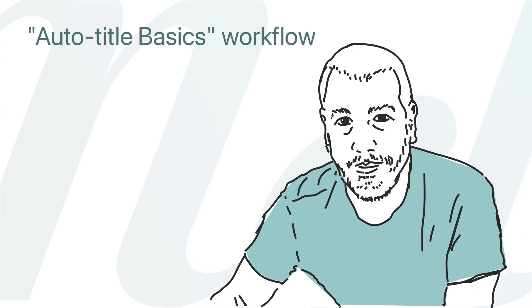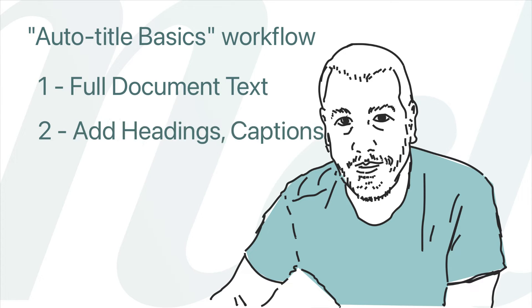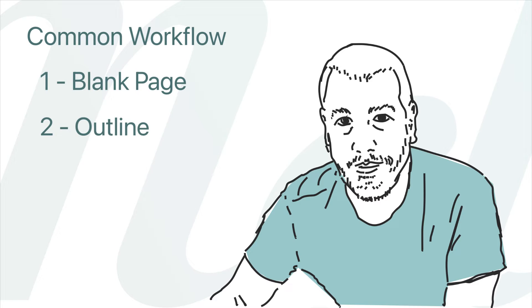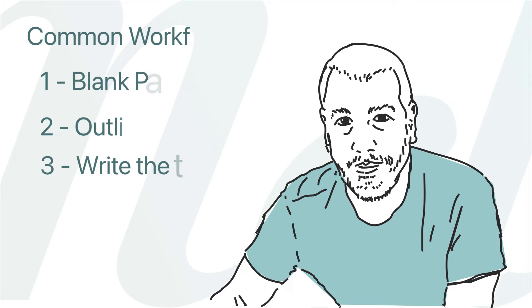When we created our document in the Autotitle Basics video, we started with the full text of the document and added headings and captions. But sometimes, perhaps most of the time, the workflow is the other way around. You start with a blank page, outline the structure of the document and then fill the gaps with the text. We can use the outline to rapidly outline our document.